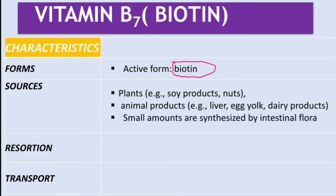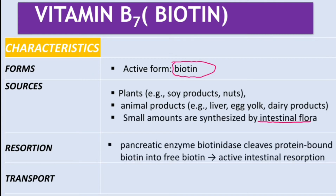Small amounts of this vitamin are also synthesized by intestinal flora — this is very important to remember. Another vitamin also synthesized by intestinal flora is vitamin K, which we'll cover later. For absorption, there is a pancreatic enzyme called biotinidase, which cleaves protein-bound biotin into free biotin, which is then actively absorbed in the intestine.